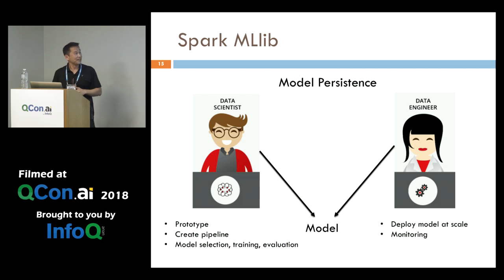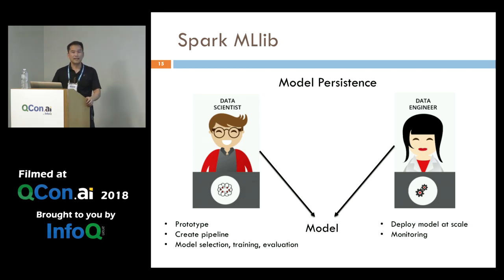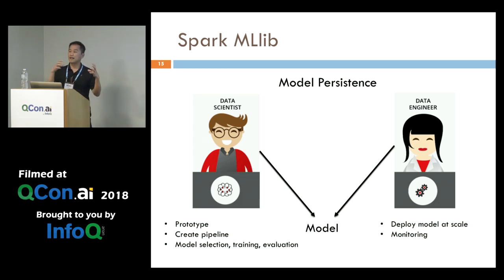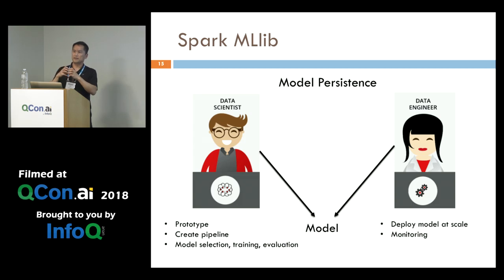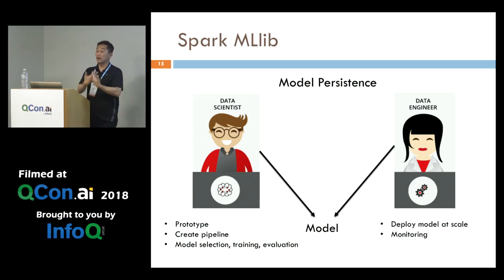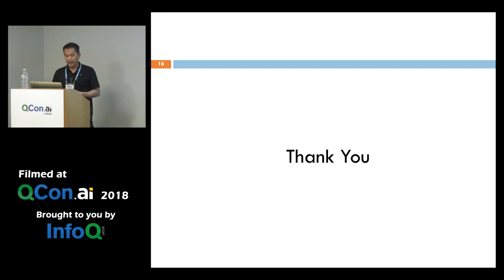The last topic is model persistence. Data scientists have their own world — they do the modeling and experimenting. Spark makes it easier to hand that model over to a data engineer to take to production through model persistence. There are many machine learning libraries out there, and the community is working to come up with a common way of persisting a model — so that's still a work in progress. Thank you, and hopefully that was useful.